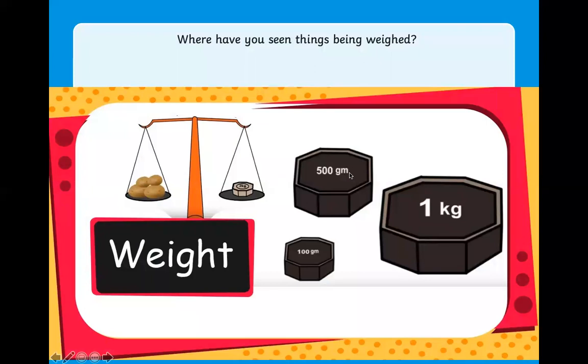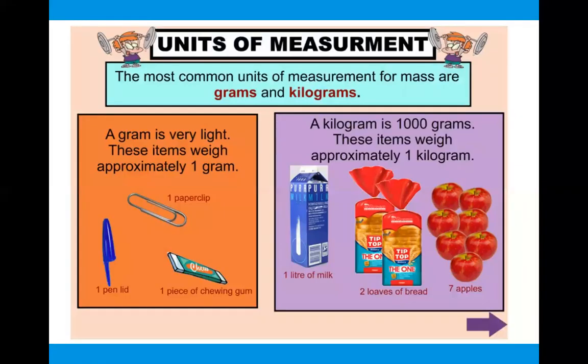So the units of measurements that we're going to be using is gram and kilogram. So have you seen things being weighed before? What have you seen? Have you been weighed before? Our unit of measurement is going to be gram and kilogram. So here you can see a gram is very light. So a paper clip, a pen lid, piece of chewing gum, these are all one gram. And then we have kilograms, so it might be a liter of milk, two loaves of bread maybe, seven apples. And a kilogram is worth a thousand grams.